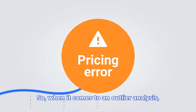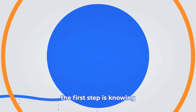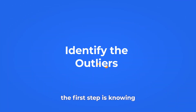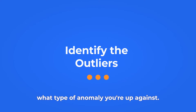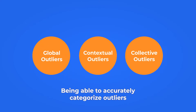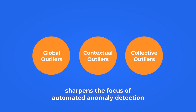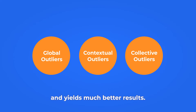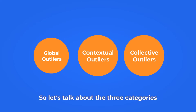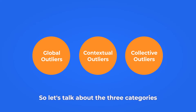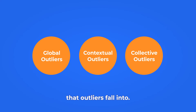So when it comes to outlier analysis, the first step is knowing what type of anomaly you're up against. Being able to accurately categorize outliers sharpens the focus of automated anomaly detection and yields much better results. So let's talk about the three categories that outliers fall into.